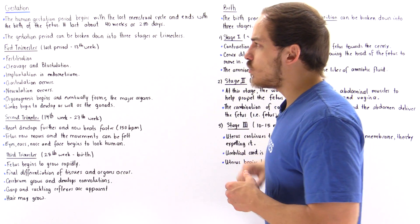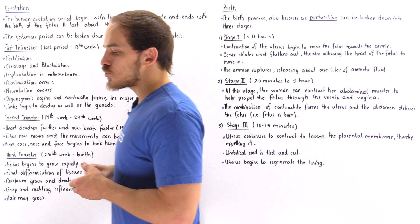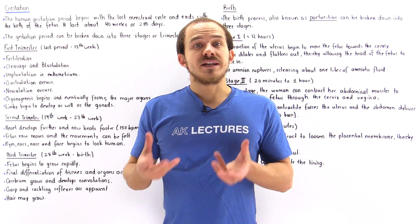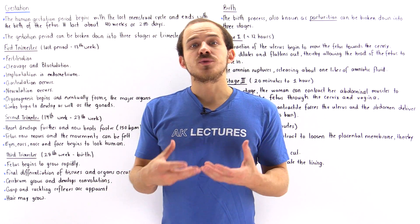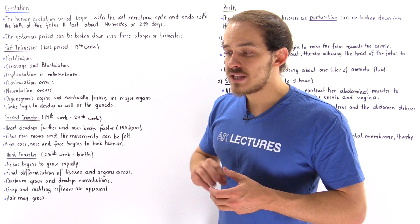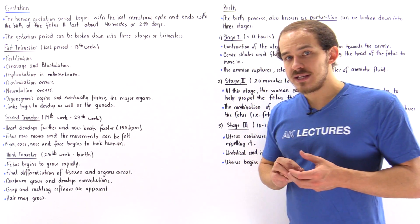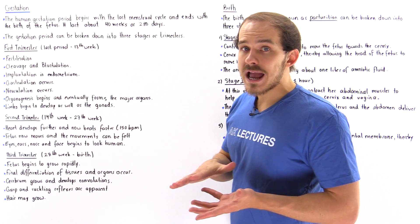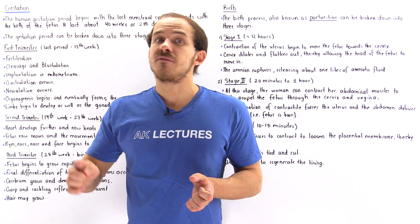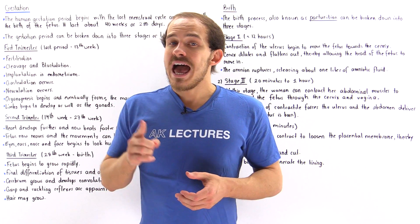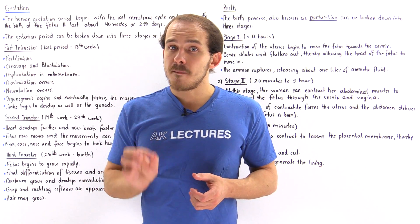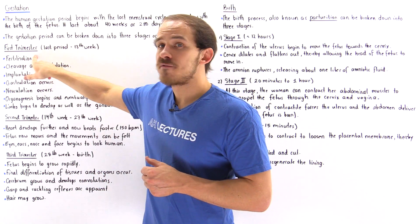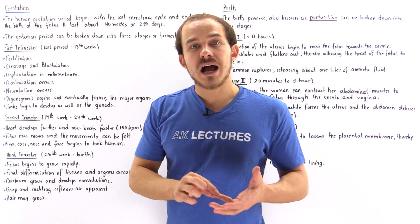Let's begin with the first trimester. Suppose sexual intercourse has not yet taken place and the menstrual cycle begins. Following sexual intercourse, sperm is deposited into the vaginal tract, travels into the uterus and up into the fallopian tube, and eventually reaches and combines with the egg cell. Once this process — known as fertilization — takes place, we form the zygote.